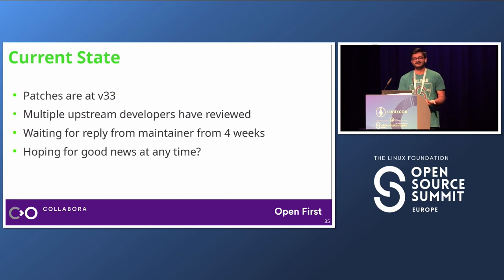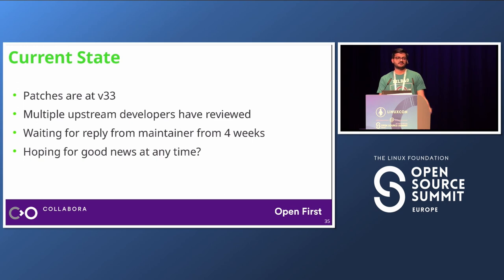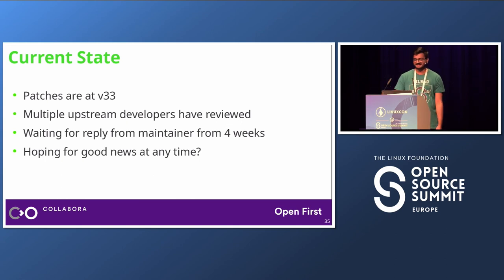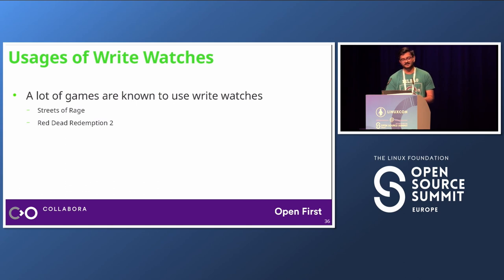Right now we are at version 33 of the patch series. Some patches have already been reviewed, and four or five developers are involved. However, we have not gotten any reply from the maintainer in the last three or four weeks — possibly due to the merge window. It can be merged at any time or may not be merged at all. There are some games that really use WriteWatch and would benefit once it gets merged into the kernel, and Wine would then switch from the mprotect mechanism to this page_map_scan ioctl, which would be a much cleaner mechanism.